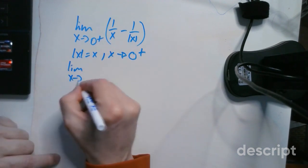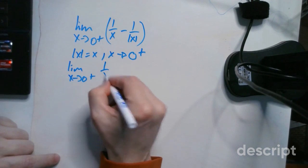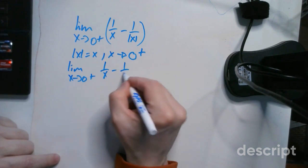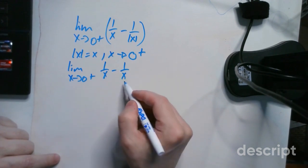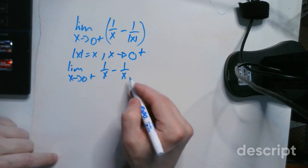We're going to have the limit as x approaches 0 from the right side of 1 over x minus just 1 over x. Notice this part where I'm pointing has no more absolute value bars.